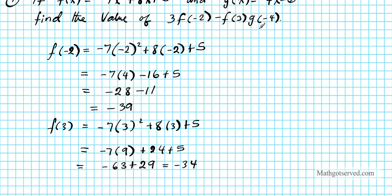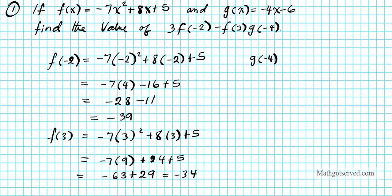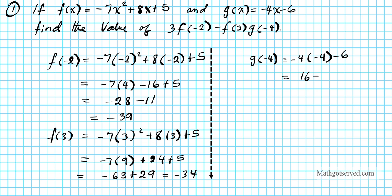Now we need to find g of negative 4. g of negative 4 means we're going to plug in negative 4 anywhere we have x in g. g of x is negative 4x minus 6, so we're going to have negative 4 times negative 4 minus 6. Negative 4 times negative 4 is 16, so we have 16 minus 6, which is 10.